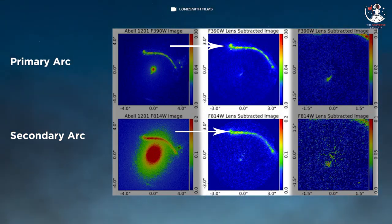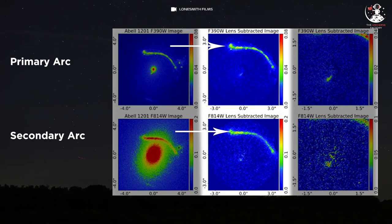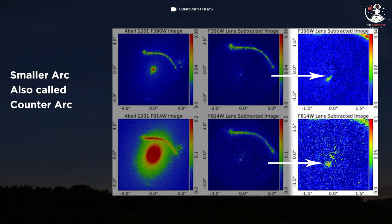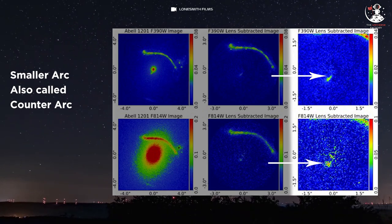In the subtracted image, have a look at the middle column where the central bright region is subtracted, keeping only the primary arc along with the smaller arc. In the third column, the subtracted image shows the enlarged smaller arc, which is the most important part of the entire image.